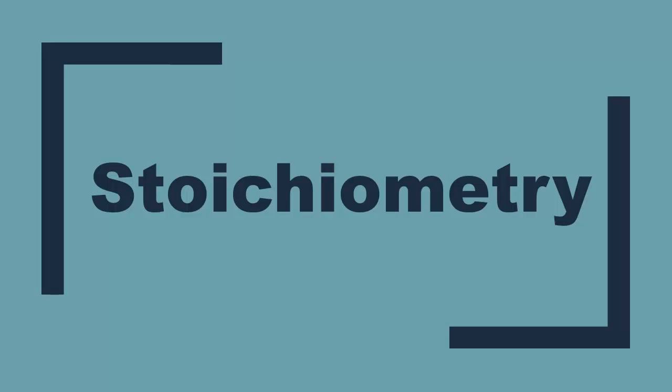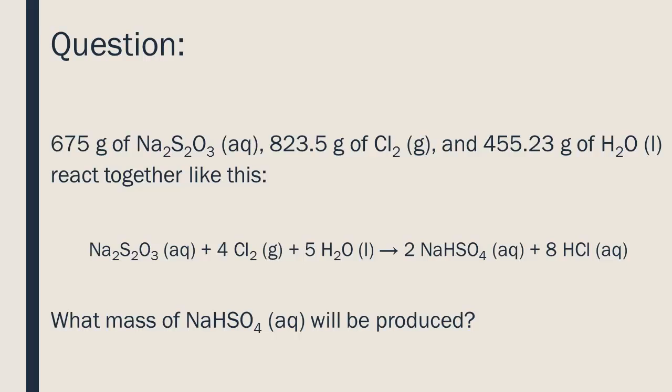Stoichiometry. 675 grams of Na2S2O3, 823.5 grams of Cl2, and 455.23 grams of H2O react together. What mass of NaHSO4 will be produced?